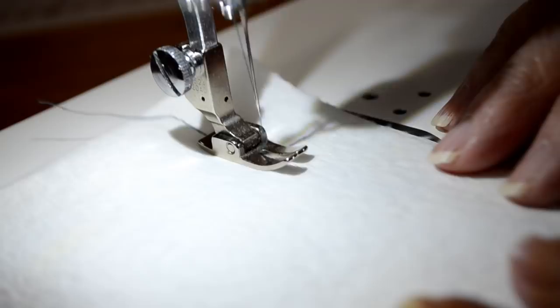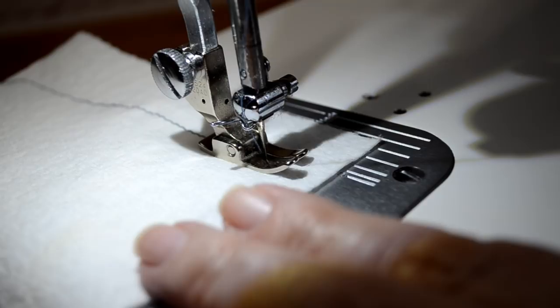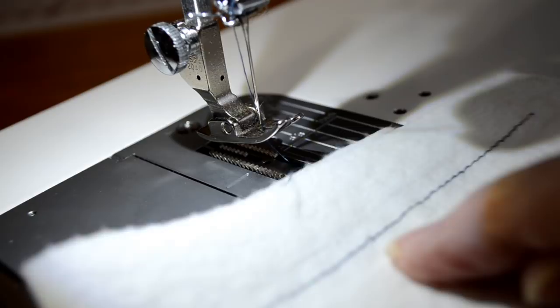Now I'm just using the regular machine foot right now for a tension test. Let's see what we have. Doesn't look too bad, although you can see some loops there. Let's turn it over on the back side. And you can really see the loops there.